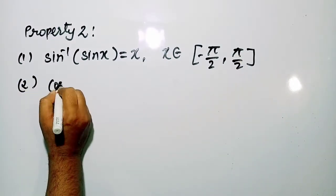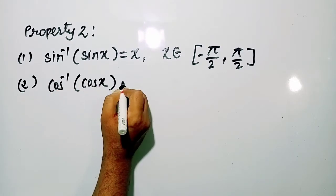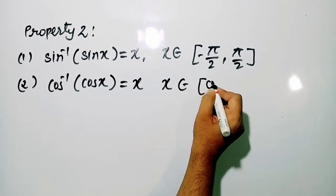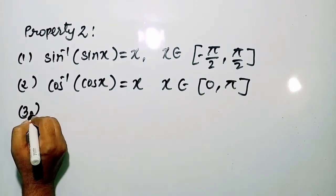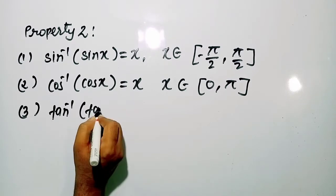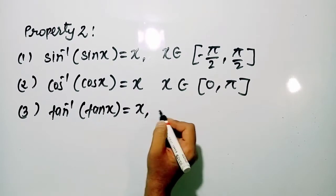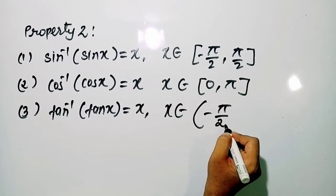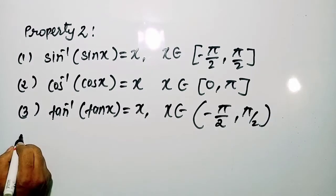Next, cos⁻¹(cos x) = x, where x belongs to [0, π]. Third, tan⁻¹(tan x) = x, where x belongs to the open interval (−π/2, π/2).